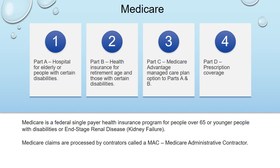Medicare has four different parts. There's Part A, the hospital coverage. There's Part B coverage, which is health insurance for physician office visits. There's Part C, the Medicare Advantage — it's a managed care plan. And there's Part D, which is the prescription drug coverage plan. Medicare is a federal single-payer health insurance program primarily for people over 65 and some younger people with certain conditions such as kidney failure. Medicare claims are processed by contractors called MACs — Medicare Administrative Contractors.